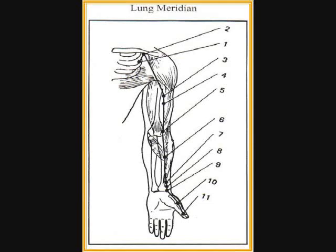Lung eleven indications: sore throat, cough, asthma, spitting of blood, fever, loss of consciousness, mania, spasmodic pain of the thumb.